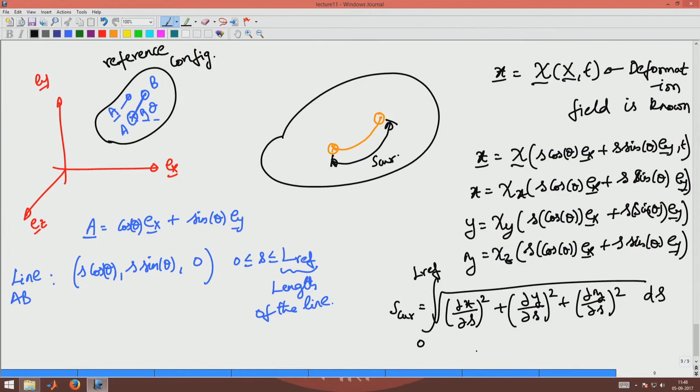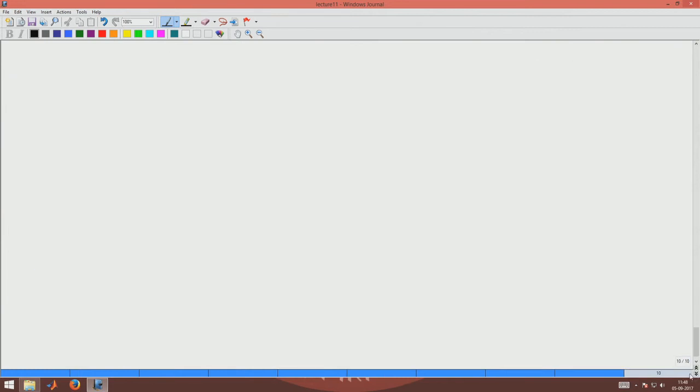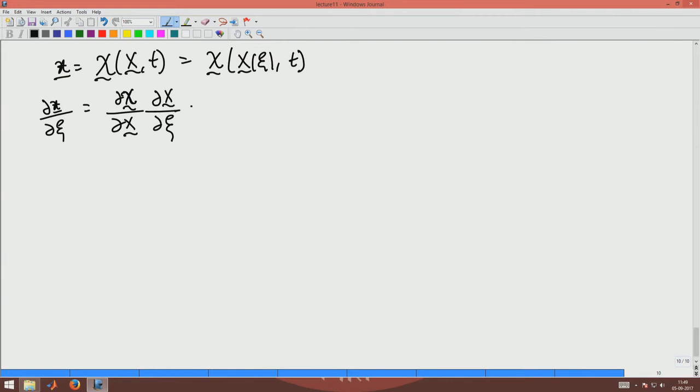So now I want to formally compute this in general. So let us do that. Now I have, what do I have? I have x which is a function of X comma t to be written as some function psi comma t. Now I want to compute ∂x/∂X which will be ∂psi/∂X times ∂X/∂X. Now this quantity is nothing but your deformation gradient F times ∂X/∂X.